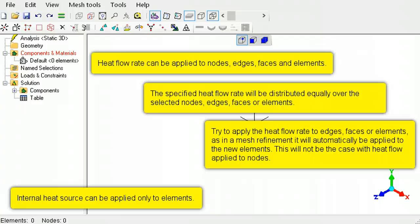The specified heat will be distributed equally amongst the selected items. When applied to edges, faces, or elements in a mesh refinement, the heat flow rate will automatically be distributed to the new elements. This will not be the case for heat flow applied to nodes.